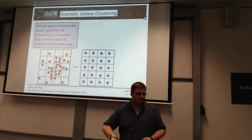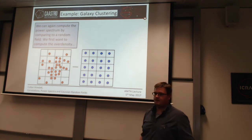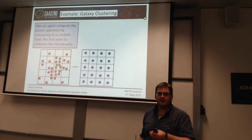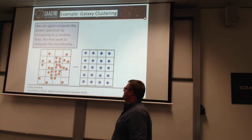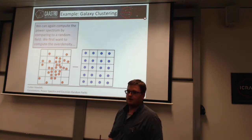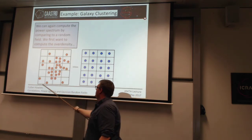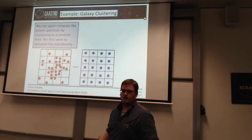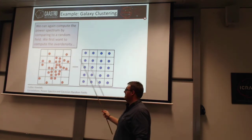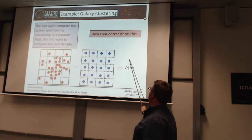How can we actually compute the power spectrum? In the same way we can compute the correlation function using a data field and a random field, we can also compute the power spectrum. Those steps almost directly translate: take your data, put it on a grid, subtract off the randoms which you also put on the grid. The difference between these two is your over-density, and then you Fourier transform that to get your over-density in k-space.